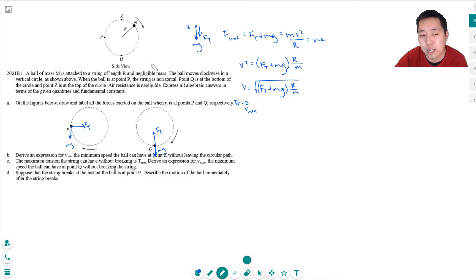The tension can't be negative. The tension can't be pushing on the ball. So V min would then be equal to square root of MG R over M. M's cancel so I get root GR.